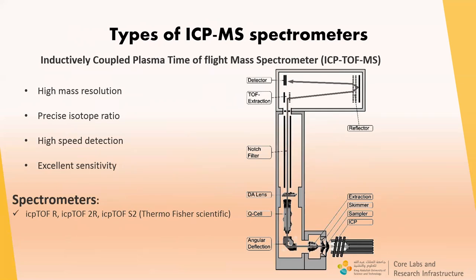Let me say a few words about inductively coupled plasma time-of-flight mass spectrometry. In the time-of-flight mass analyzer, the ion's mass-to-charge ratio is determined via a time-of-flight measurement. Ions are accelerated by an electric field so that all ions have the same kinetic energy but different velocities depending on mass-to-charge ratio; consequently, the time of flight depends on mass-to-charge ratio. Modern ICP-TOF-MS spectrometers combine ICP ion optics, collision reaction cell, and vacuum system of quadrupole spectrometers with an ion filter, additional ion optics, and orthogonal acceleration analyzer, providing high mass resolution, precise isotope ratios, high-speed detection, and excellent sensitivity.